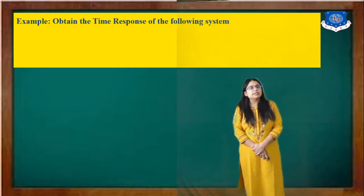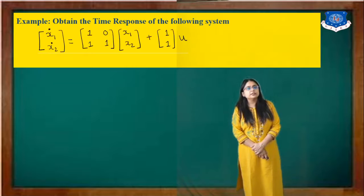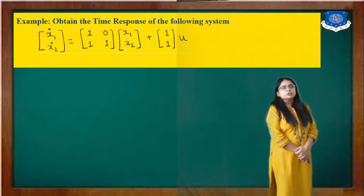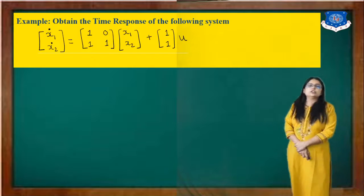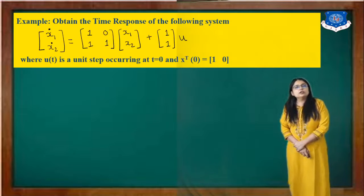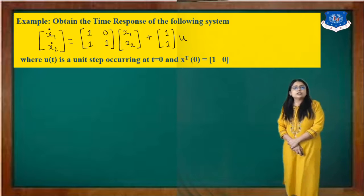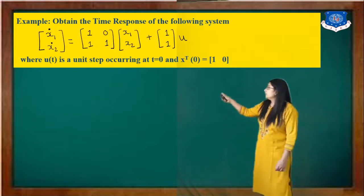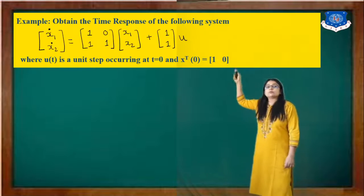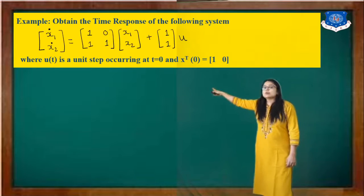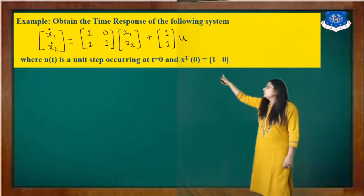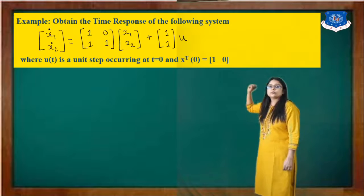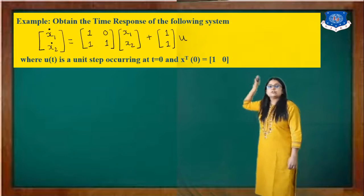We want to obtain the time response for the following data: [x1-dot, x2-dot] equals [[1,0],[0,1]] times [x1, x2] plus [1,1]·u, where u(t) is a unit step occurring at t equals 0. One more thing is given: x-transpose(0) equals [1, 0]. This is the initial condition, so x(0) is the column vector [1, 0].